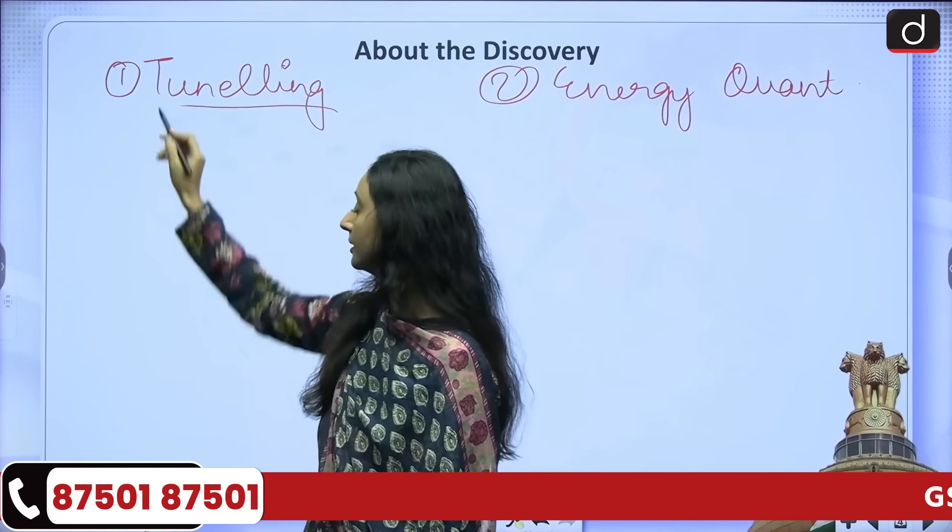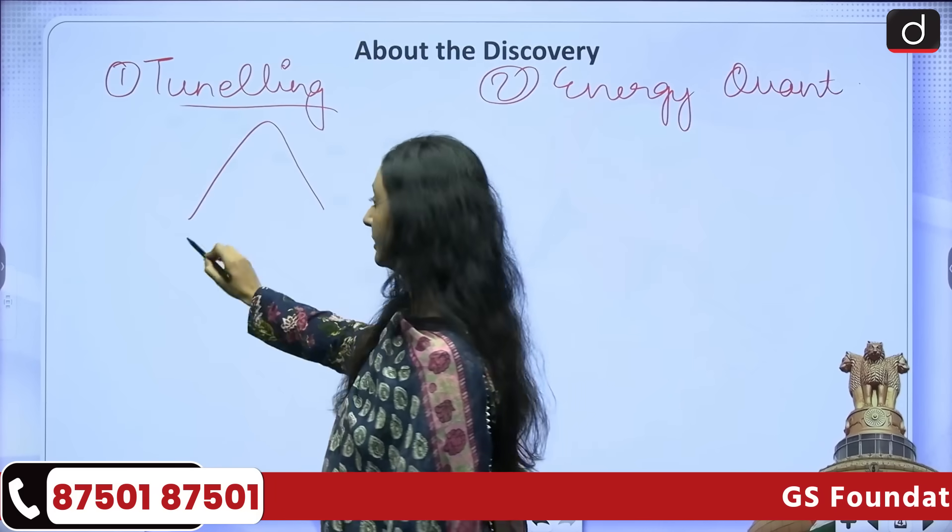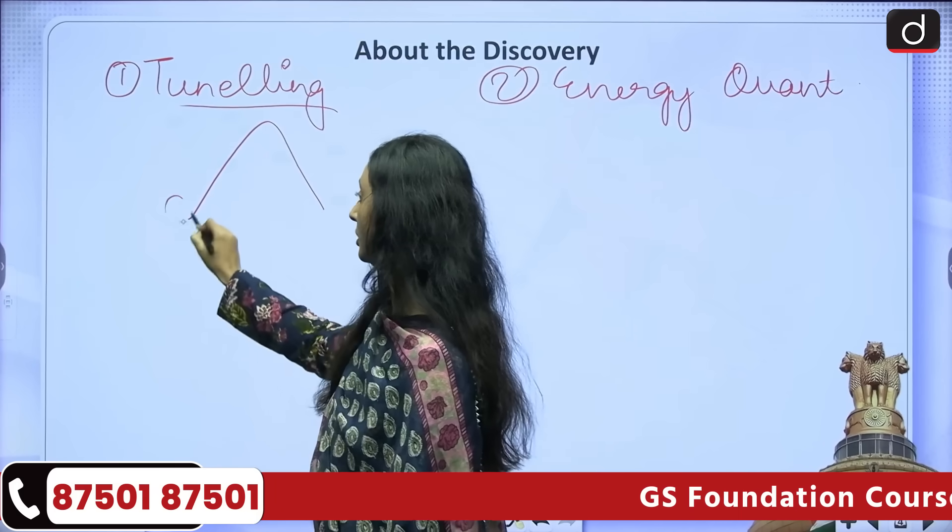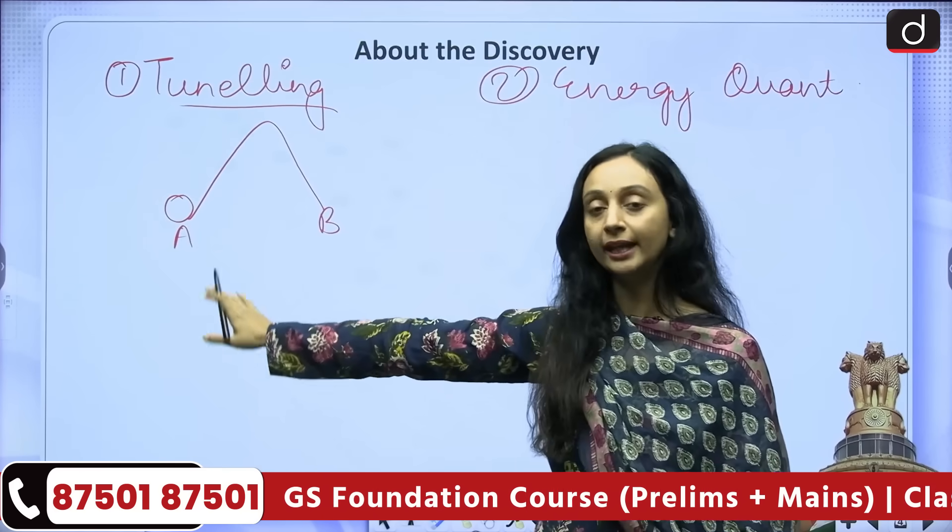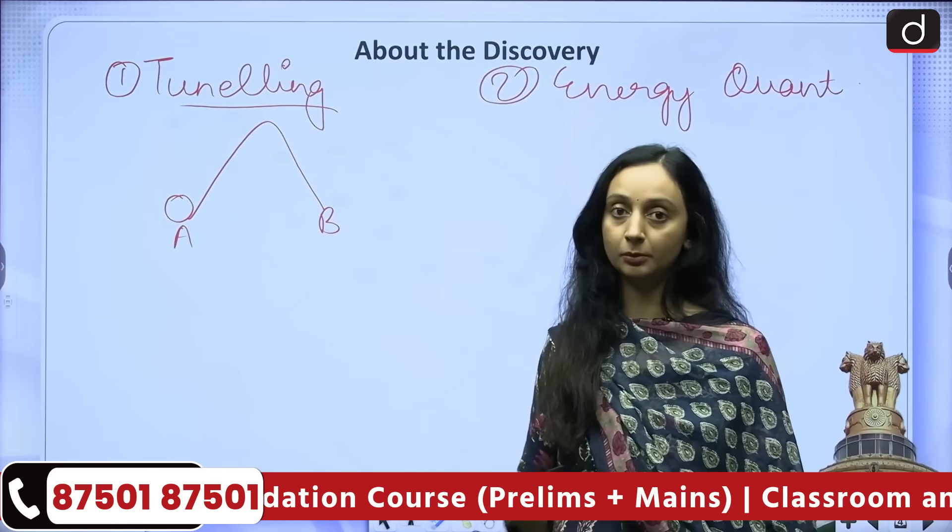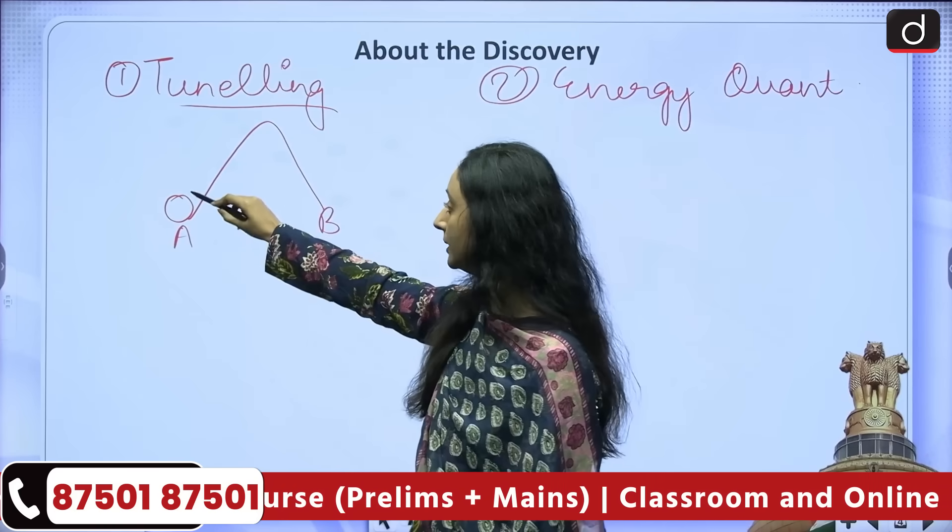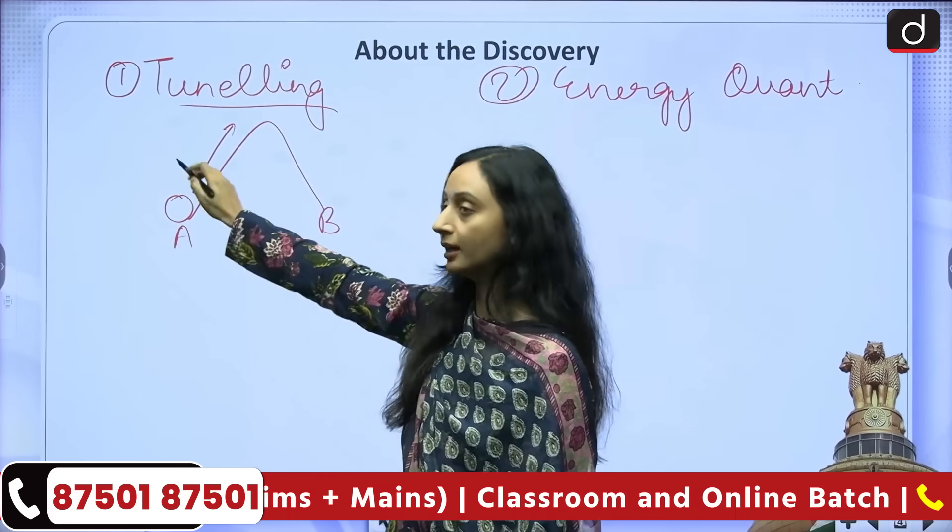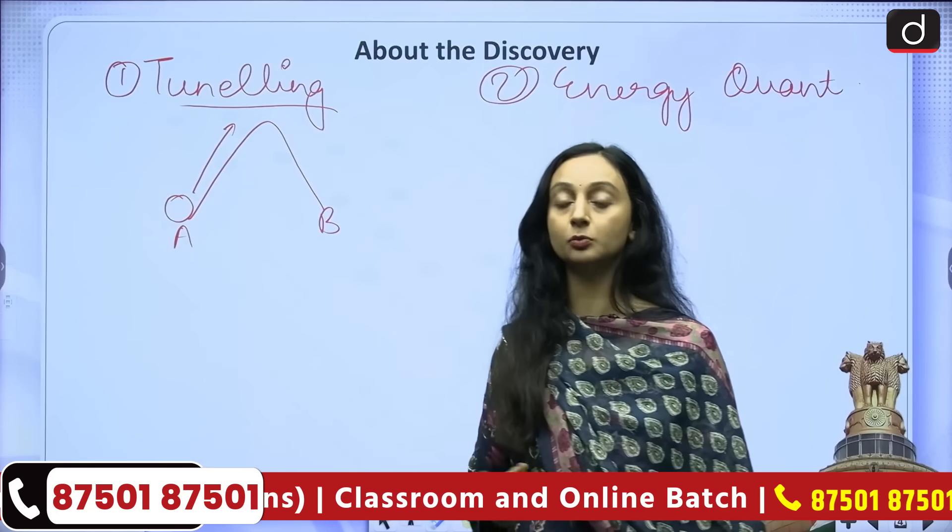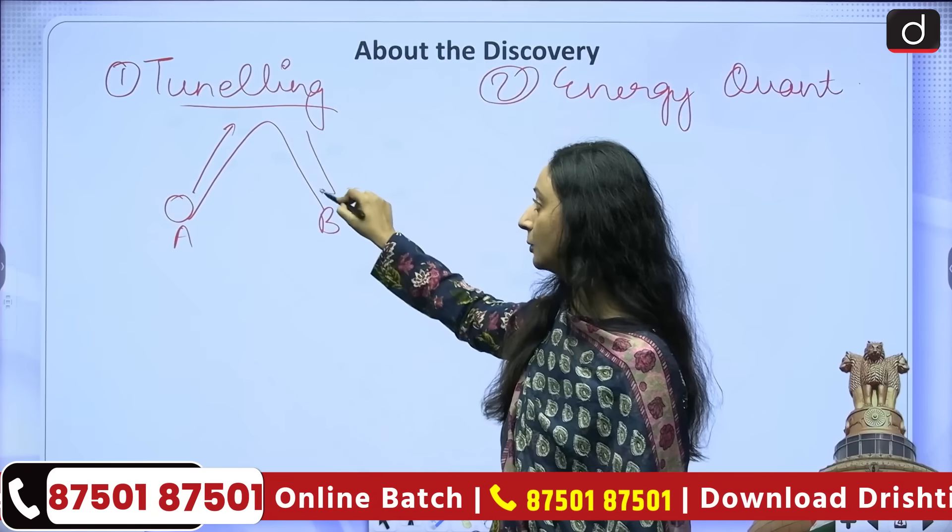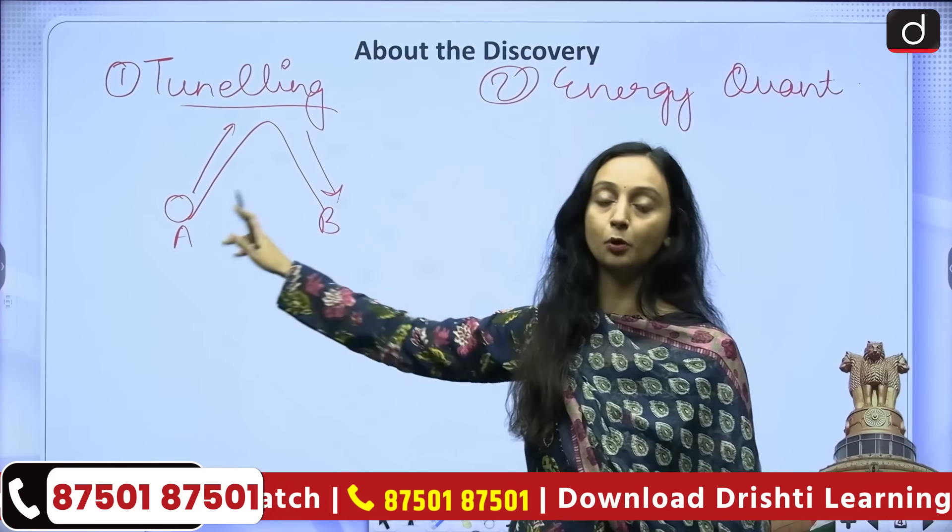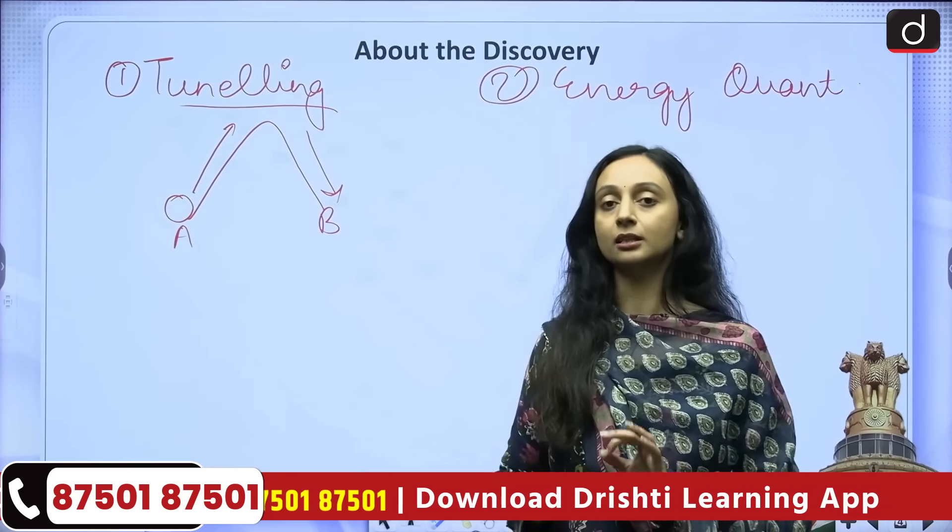Now tunneling. Let's say this is a hill and there is a ball. These are points A and point B. We want to move the ball from point A to point B. How will we be able to do that? So this ball will need to climb up the hill. Enough energy is required. Enough energy needs to be given to this ball in order for it to climb up the hill and then it can go downhill and then it will be able to move from point A to point B. This is the normal scenario.